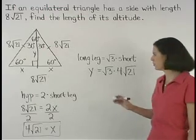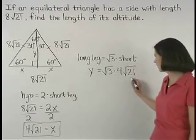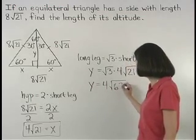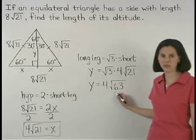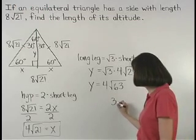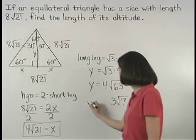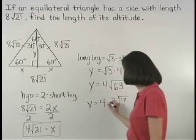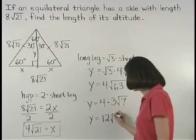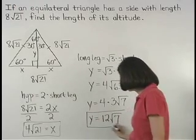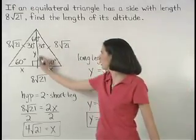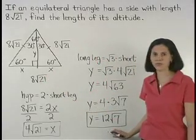Now, multiplying the numbers inside the radicals together gives us y equals 4 root 63. And notice that the square root of 63 can be broken down to 3 root 7. So we have y equals 4 times 3 root 7, or y equals 12 root 7. So the altitude of our equilateral triangle has a length of 12 root 7.